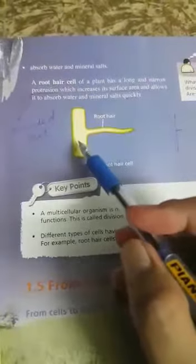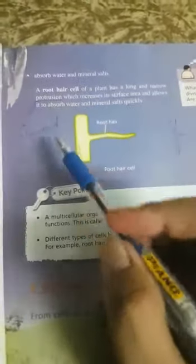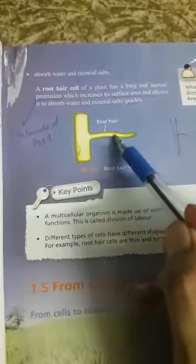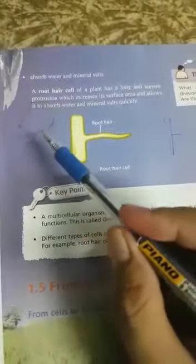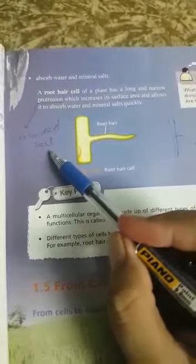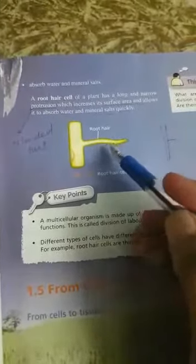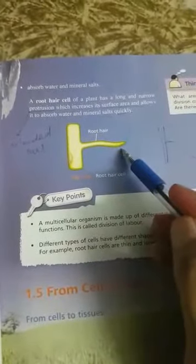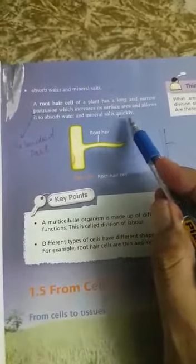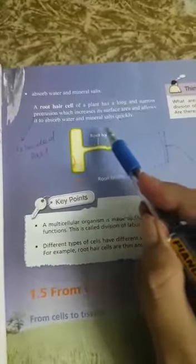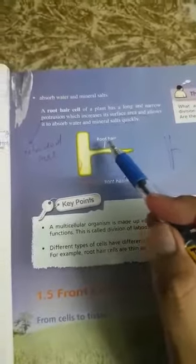Next is the root hair cell. Root hair cells are found in the roots. You can see the diagram of the root hair with a long root hair. This root hair cell is also called a protrusion - protrusion means the extended part. This extended part goes deep inside the soil and absorbs water and mineral salts quickly. All these water and minerals help in photosynthesis and for the plant growth also.